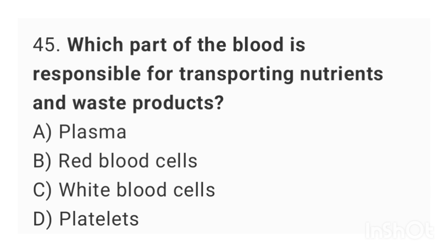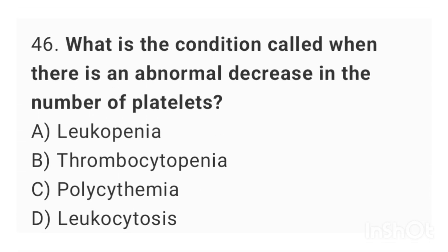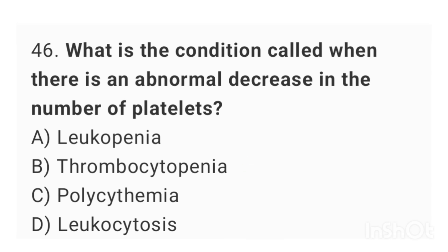Question number 45: Which part of the blood is responsible for transporting nutrients and waste products? The right answer is option A: plasma. Question number 46: What is the condition called when there is an abnormal decrease in the number of platelets? The right answer is option B: thrombocytopenia.